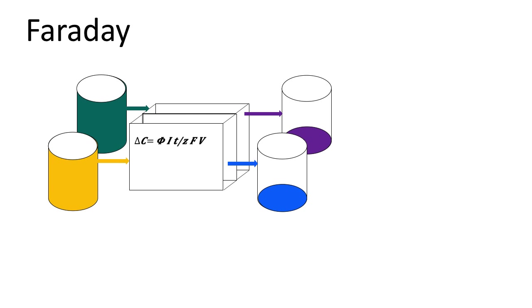The next key decision was cell configuration, and whether to have a two tank or four tank system. A four tank system requires complete conversion of vanadium species in one pass through the flow cell.